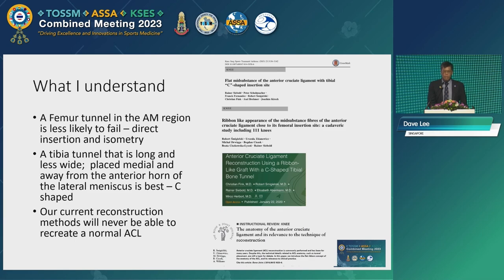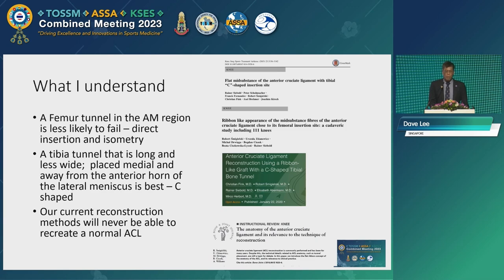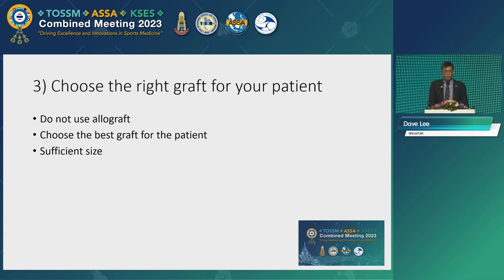We also know that the ACL is not a round structure. So if you do a large graft and you fill the footprints, you have to be careful about impingement, especially in extension. What I understand from the anatomy is that the ACL femoral tunnel should probably be in the AM region because that is most protective — it is the direct insertion and it's most isometric. We also know the ribbon-like and C-shaped appearance of the tibial insertion from authors like Rainer Siebel and Szymelski. Because of that, people are increasingly trying to reconstruct the ACL as a thin graft. Our reconstructions will never be able to recreate a normal ACL.